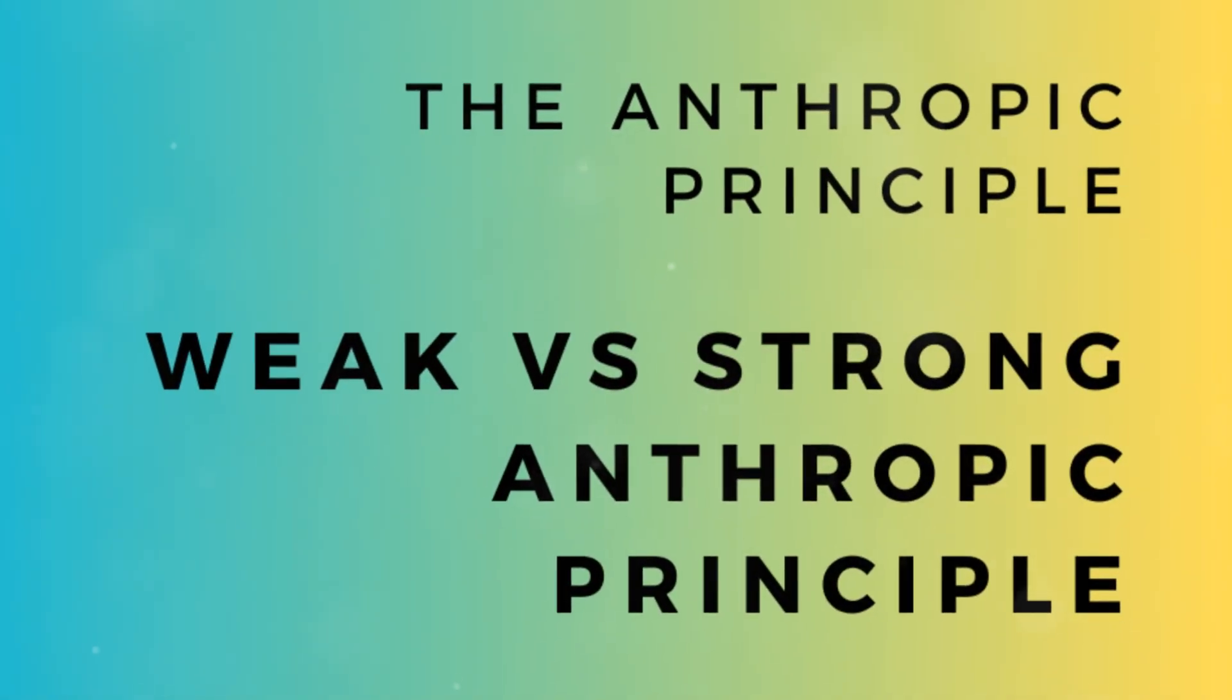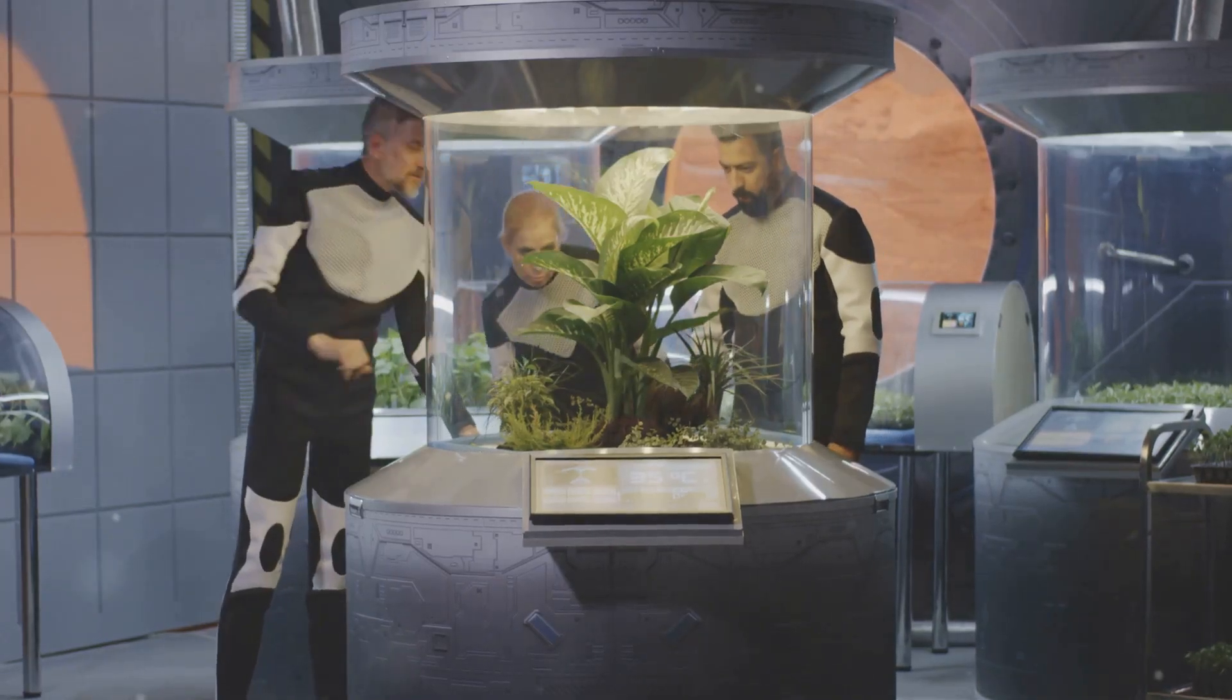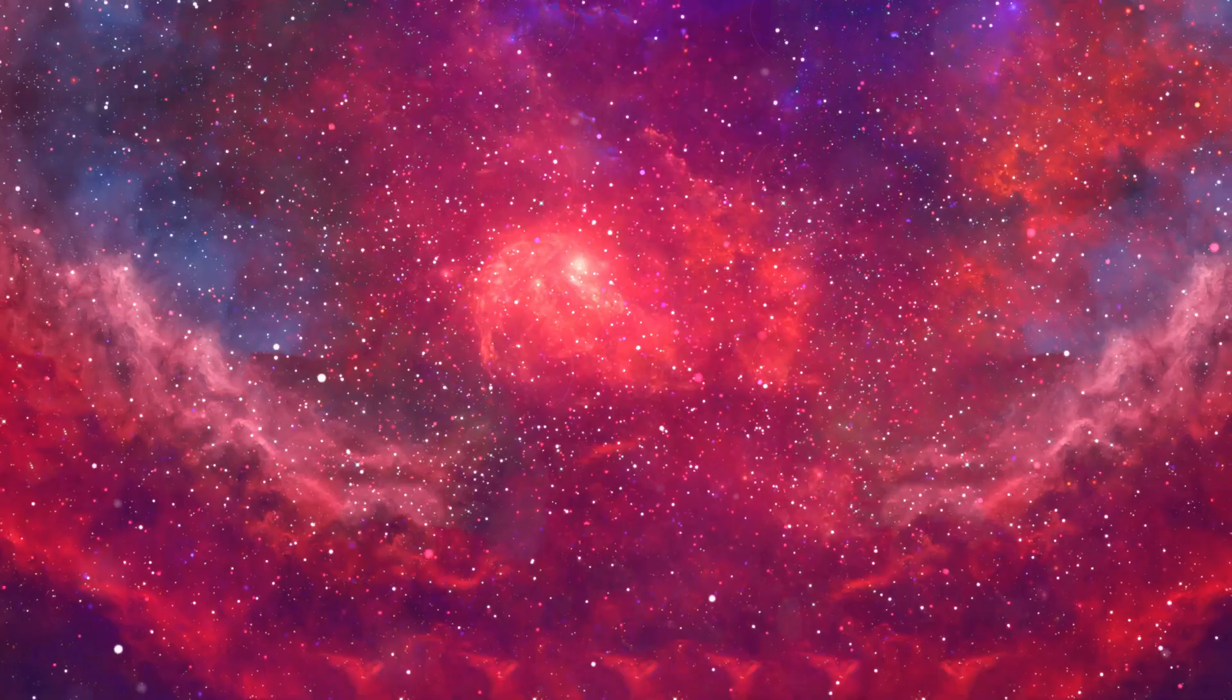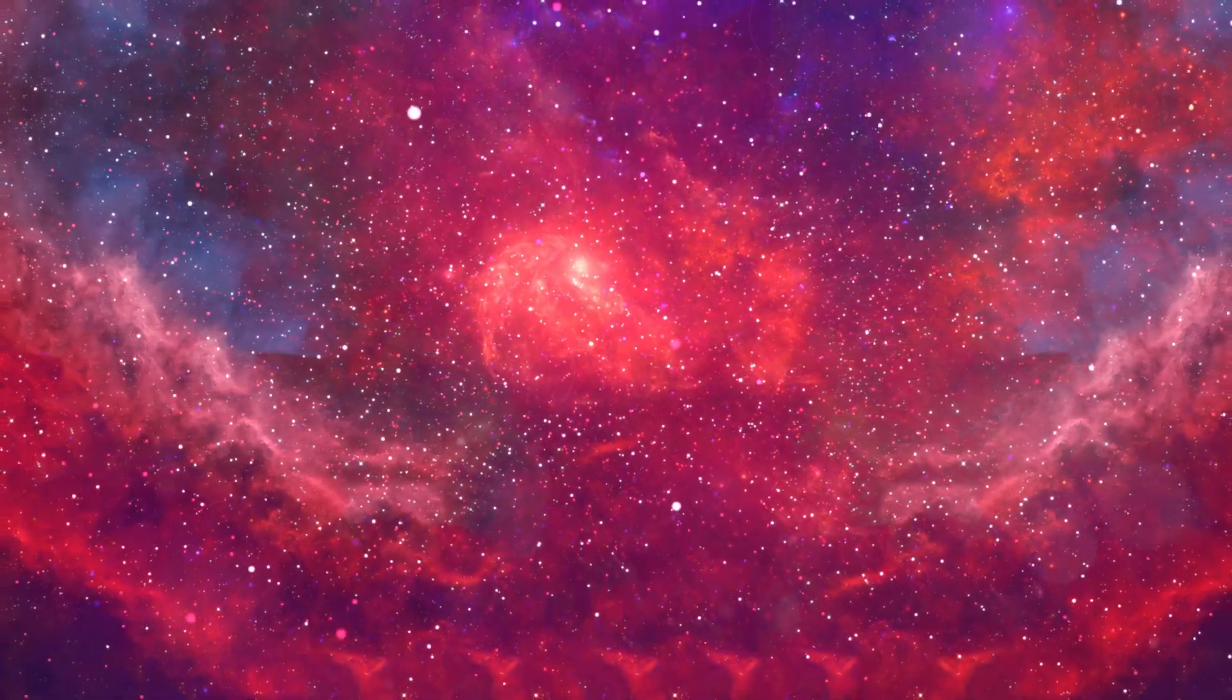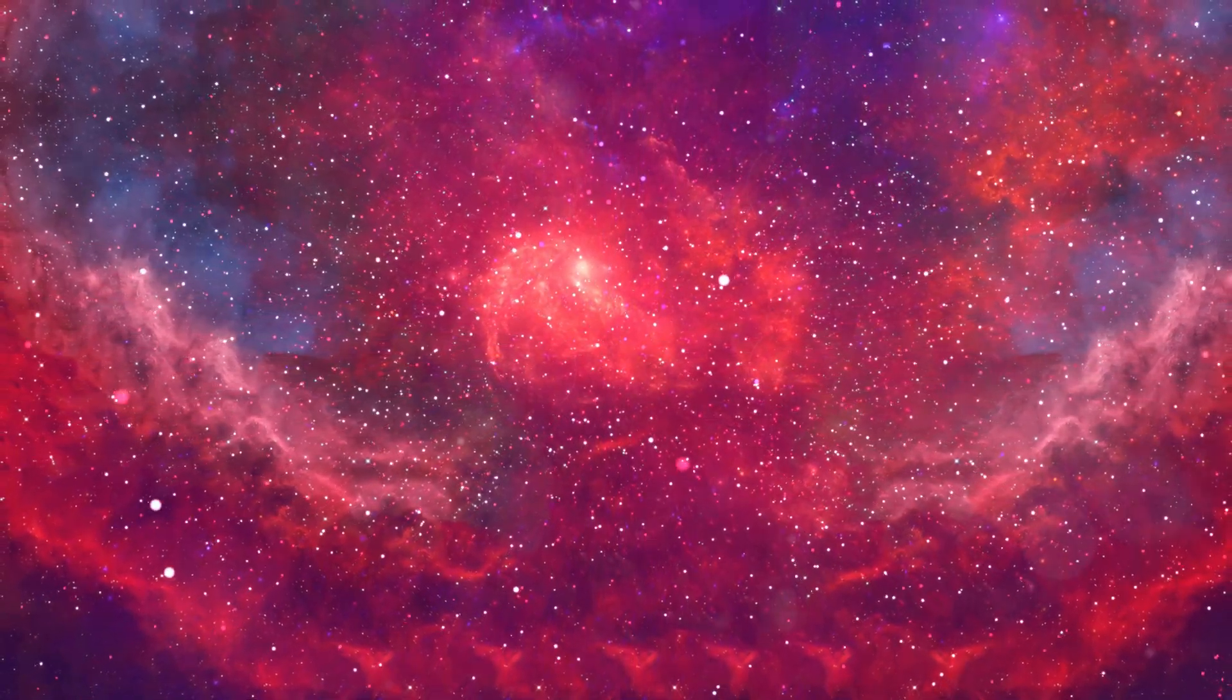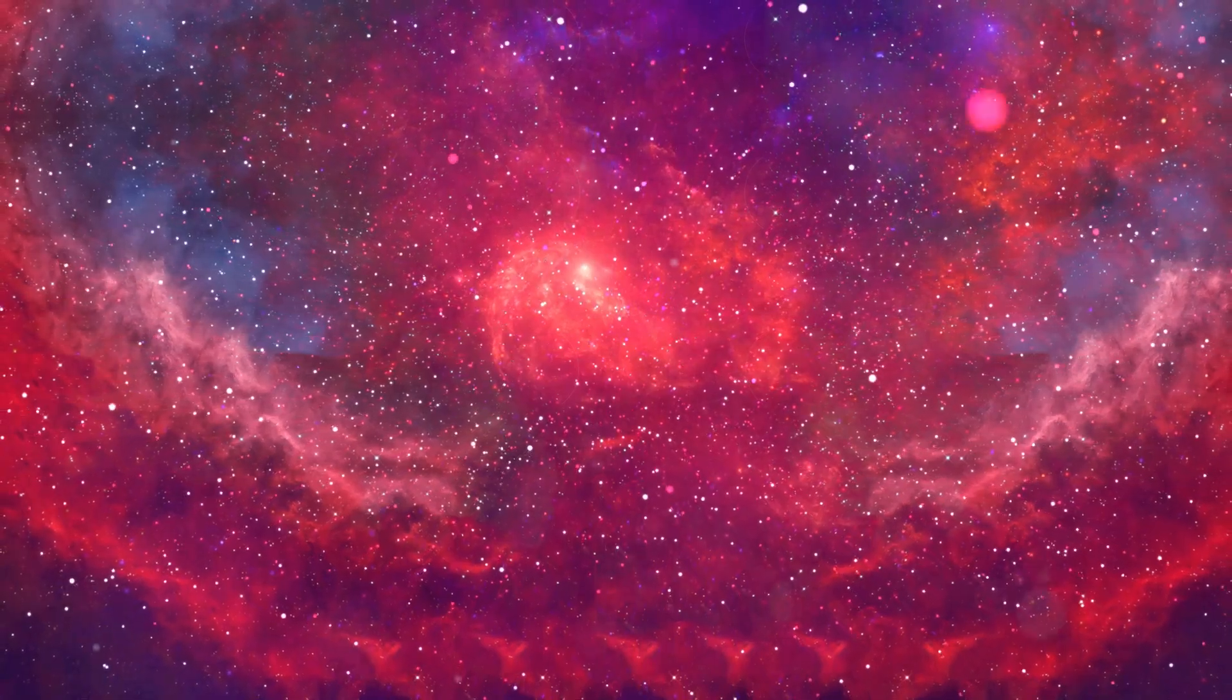The anthropic principle is often divided into two versions, weak and strong. These two interpretations offer different perspectives on why the universe appears to be fine-tuned for life. The weak anthropic principle, or WAP, is the less controversial of the two. It provides a straightforward explanation that doesn't delve into deeper philosophical or require metaphysical implications.